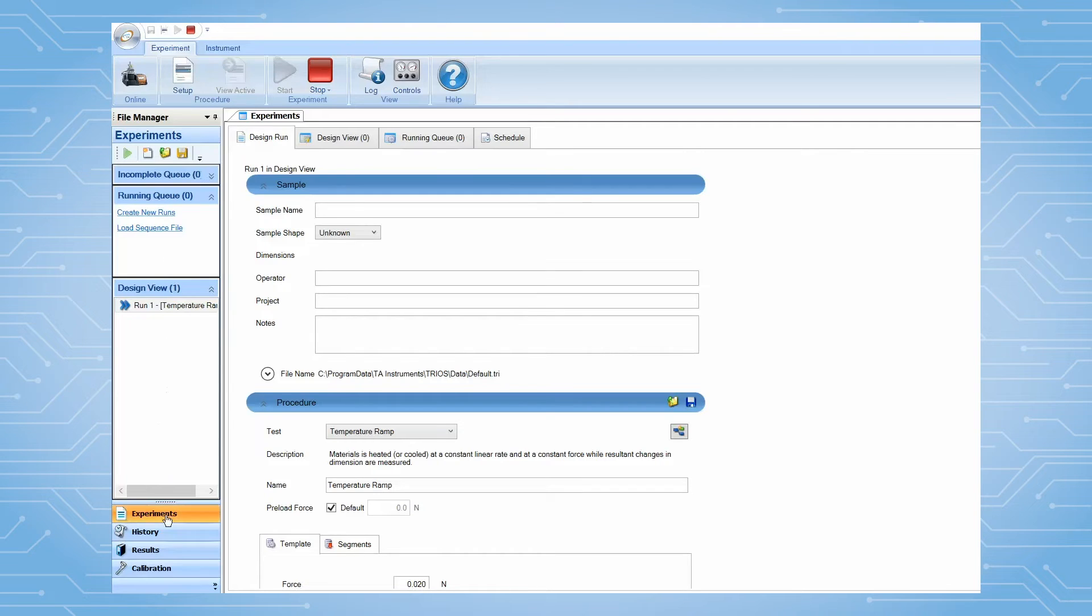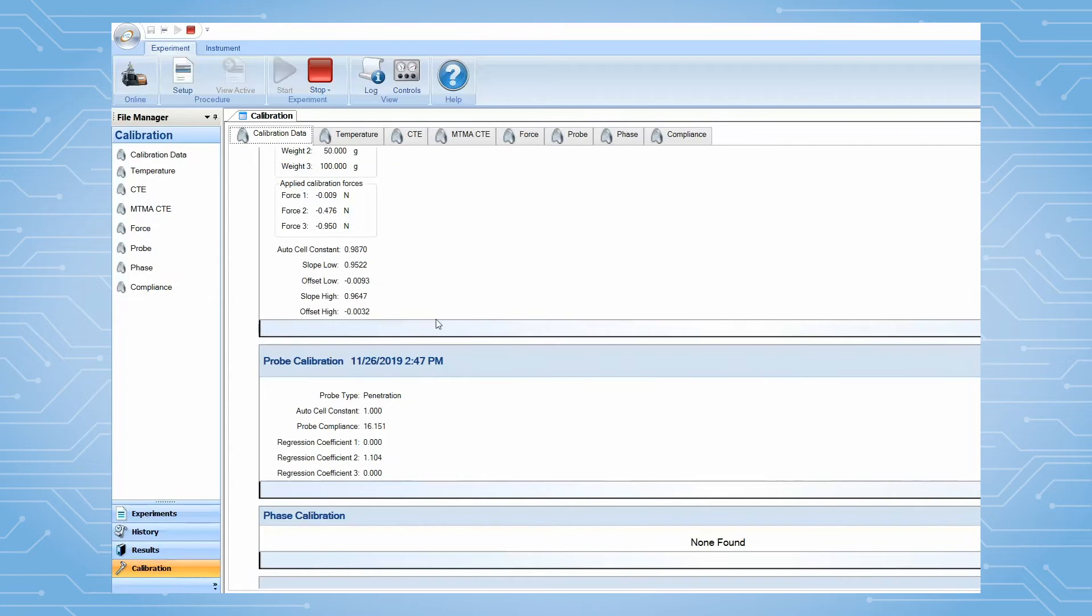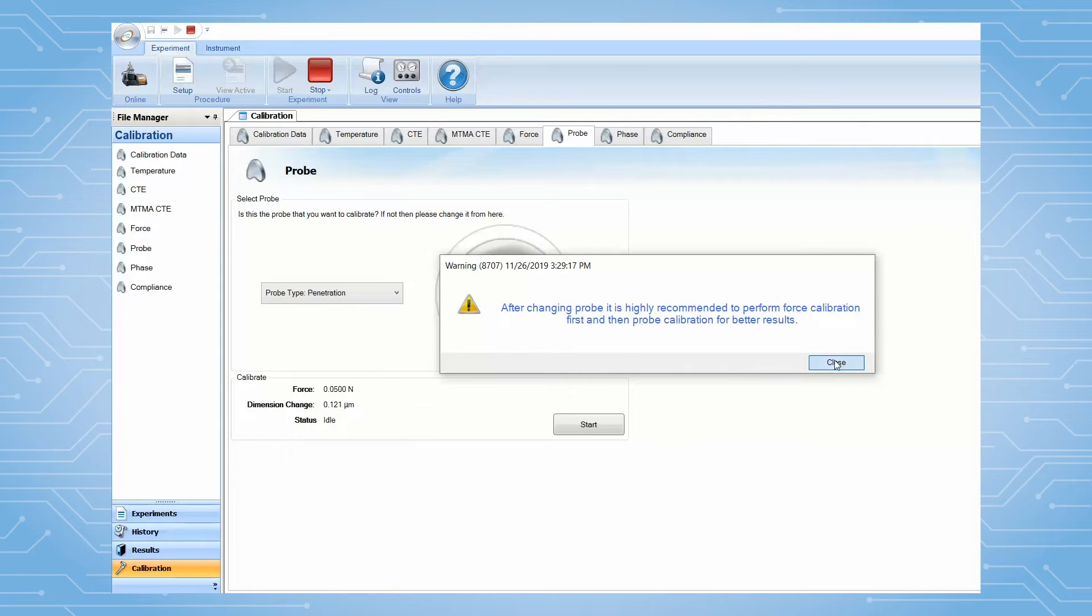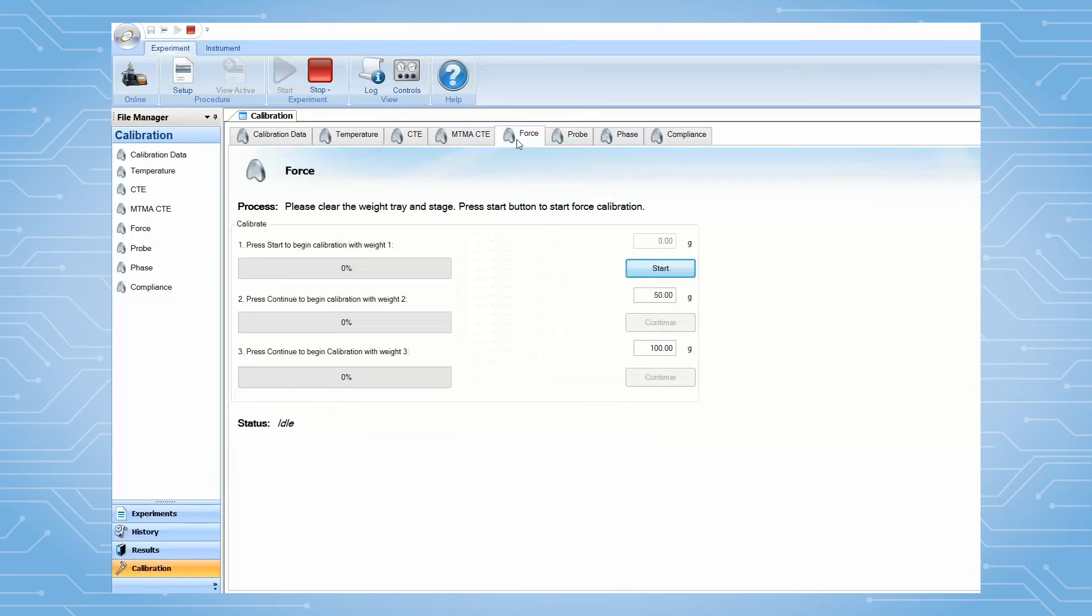Next, from the TRIO software, go to the file manager calibration panel. Click on the probe tab. Select the type of probe you will use. Go to the force tab and click start to begin the calibration.